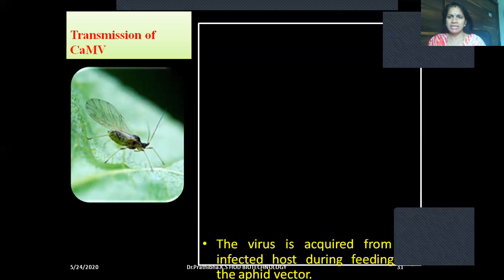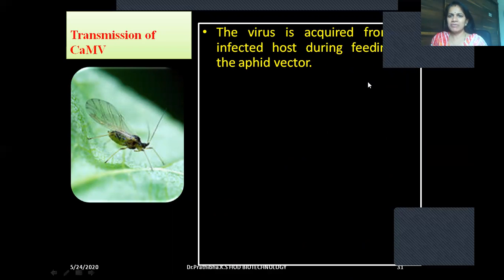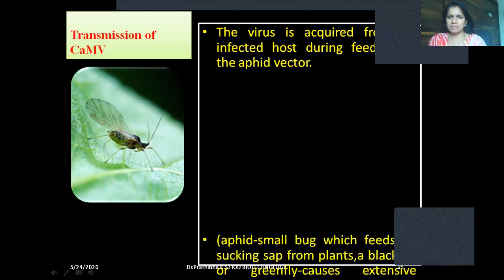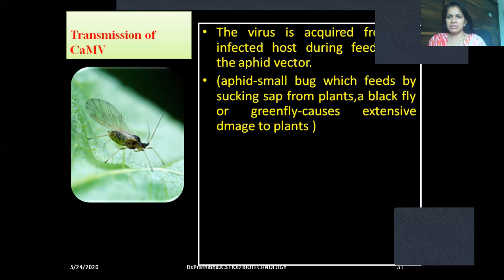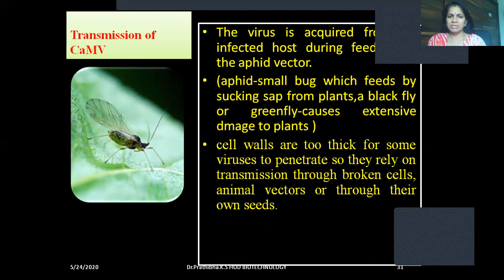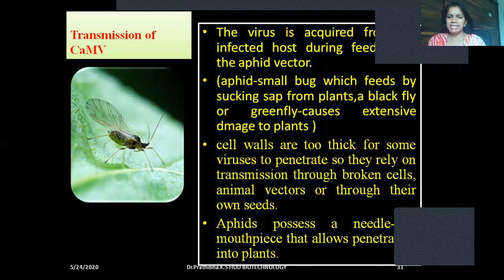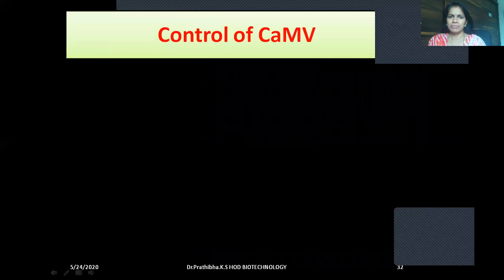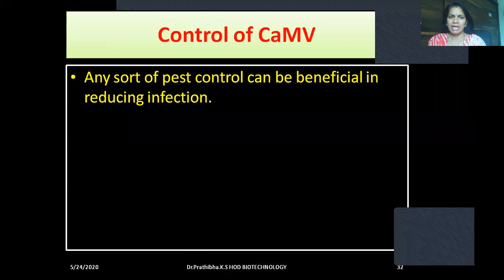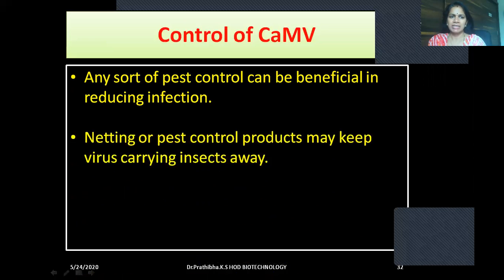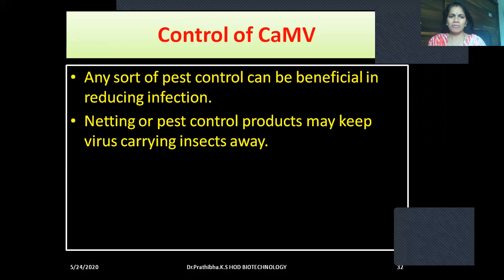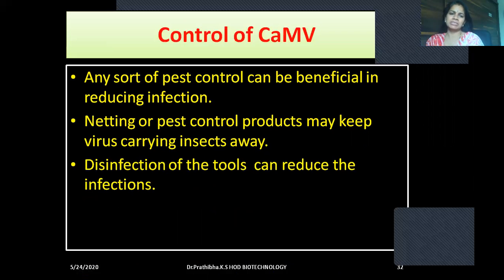Now let us go through the transmission of CaMV. The virus is acquired from an infected host during feeding by the aphid vector. An aphid is a small bug which feeds by sucking sap from plants — a black fly or green fly which causes extensive damage to plants. Cell walls are too thick for some viruses to penetrate, so they rely on transmission through broken cells. Aphids possess needle-like mouthparts that allow penetration into plants. Any sort of pest control can be beneficial in reducing infection. Nectins or pest control products may keep virus-carrying insects away. Disinfection of tools can reduce infections.